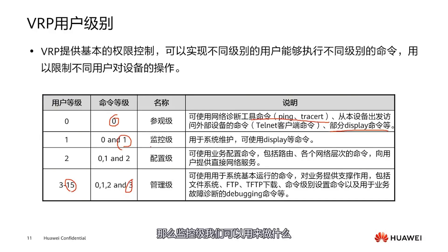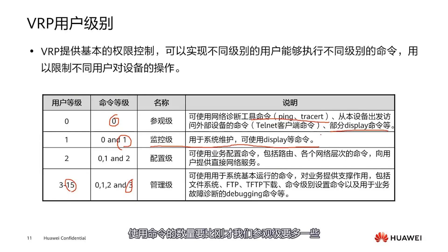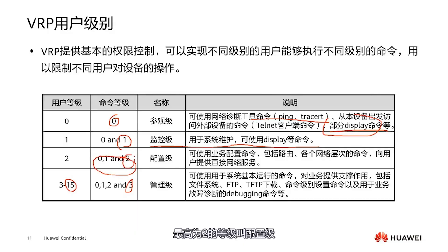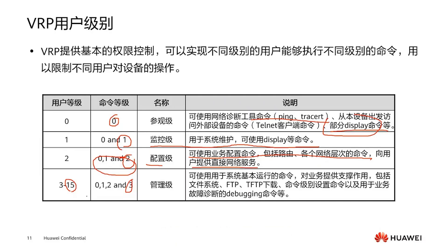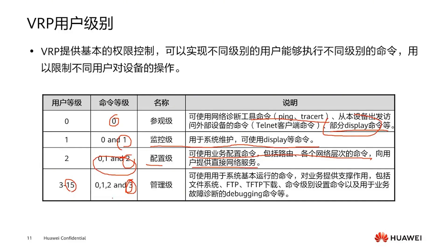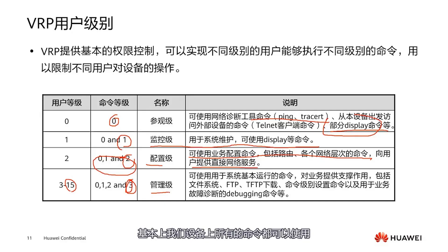At level 1, the monitoring level, you can use more commands for system maintenance than at the visitor level. Level 2 is the configuration level, where you can configure the network using configuration commands. Command levels range from level 0 to level 3. Level 3 is the highest, called the management level, and at this level basically all commands on the device can be used.